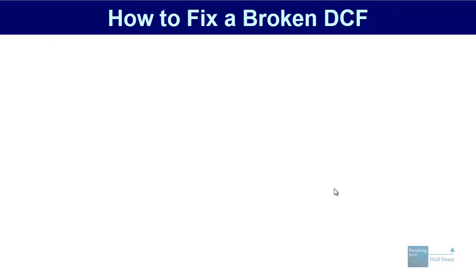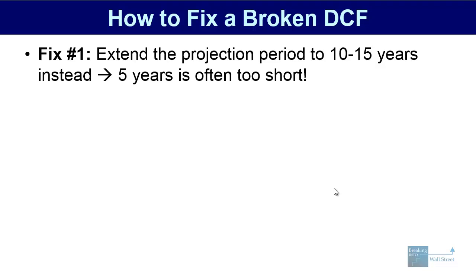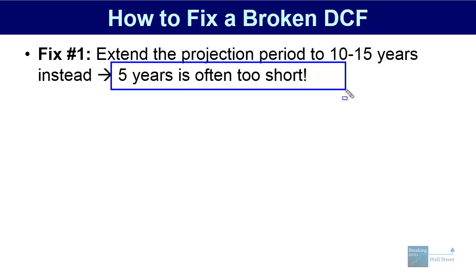When you figure out you have a problem, there are a few things you can do to fix it. First, you can extend the projection period to 10 to 15 years instead of five, which is often too short to be useful. People will argue that you can't predict the future 10 to 15 years out, but those arguments aren't really valid — business owners and management teams do think that far ahead when they invest or acquire a company, and as an investor you should be thinking about the long-term picture too.